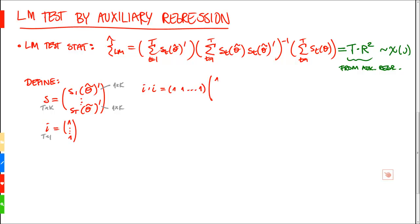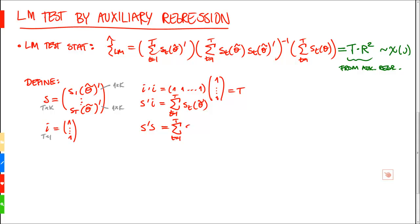That implies that i'i equals [1 1 … 1][1 1 … 1]' = T. And i'S is going to be equal to the sum from t=1 to T of all the individual scores evaluated at the restricted parameters θ̃. Finally, S'S is going to be the sum from t=1 to T of the outer product of the scores evaluated at θ̃.